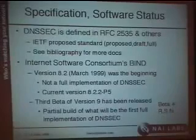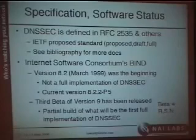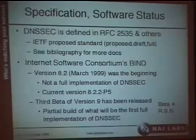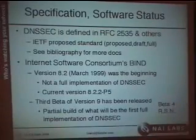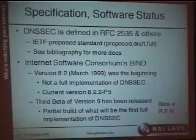DNSSEC is defined in RFC 2535, which is the primary definition. There are other associated RFCs listed in a bibliography at the end of this presentation. The primary implementation of DNSSEC is ISC's BIND. We're working on version 9. DNSSEC first appeared in BIND in version 8.2 last March, and we're up to 8.2.2 P5. BIND 8.2 is a good place to learn DNSSEC, but we wouldn't recommend using it operationally yet since we weren't really ready to add DNSSEC in 8.2.